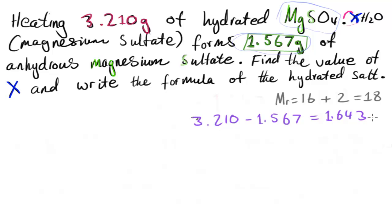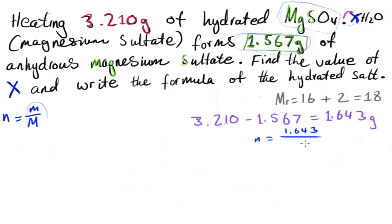Now we have the mass of water as 1.643 grams, so we can find the number of moles using the formula n equals mass divided by molar mass M. Therefore, the number of moles of water equals 1.643 divided by 18, which gives us 0.0913 moles, rounded to three significant figures.